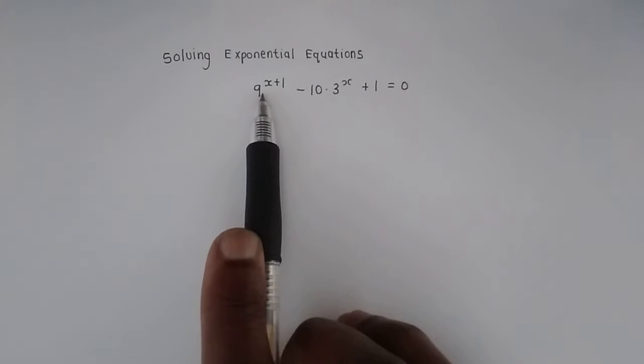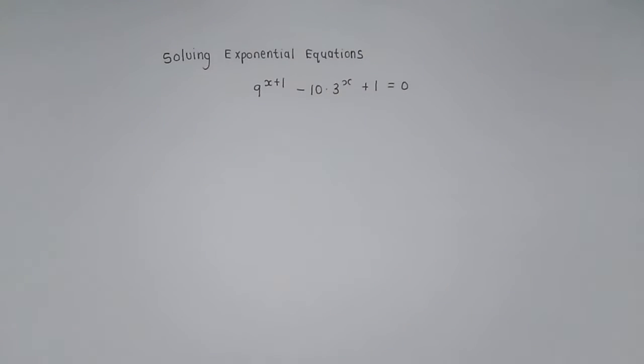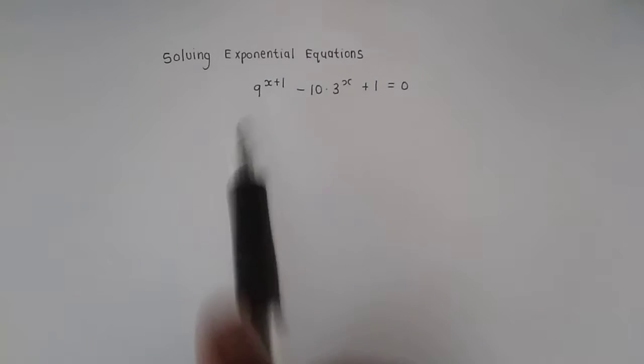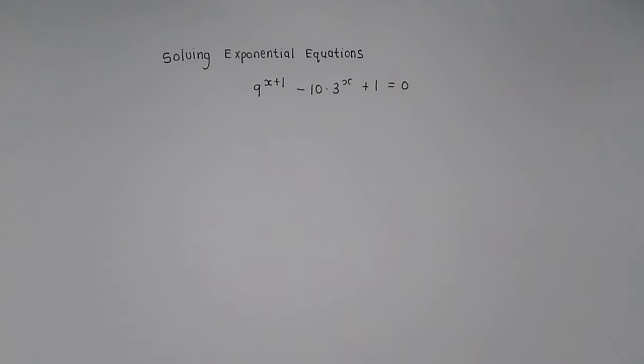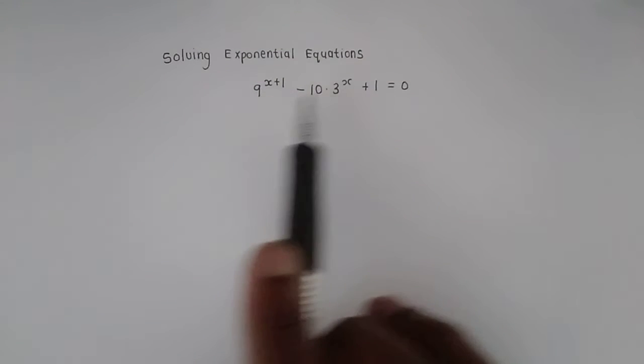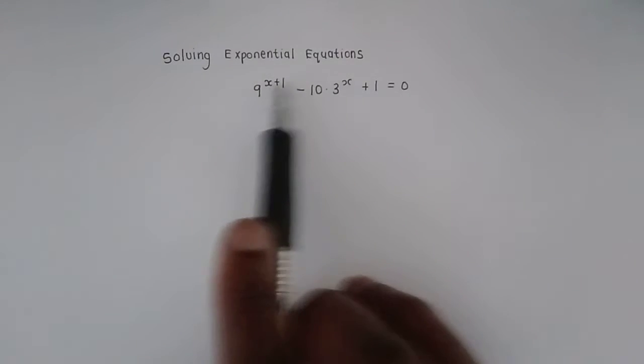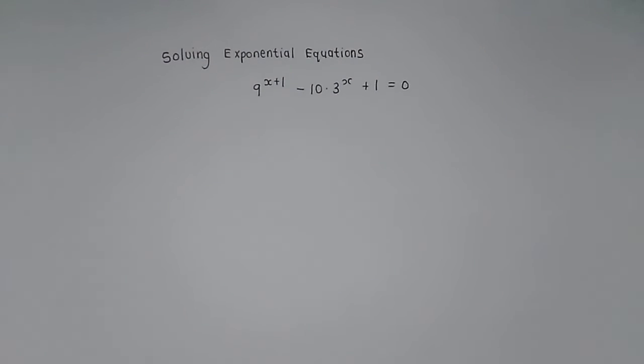So when you then change the 9 to a 3 squared, because remember the goal of exponential equations is to get the bases the same, you are encouraged to change this 9 into a 3, because then you will have these two bases that contain your variable x that you're trying to solve for in the same base. Make sense?